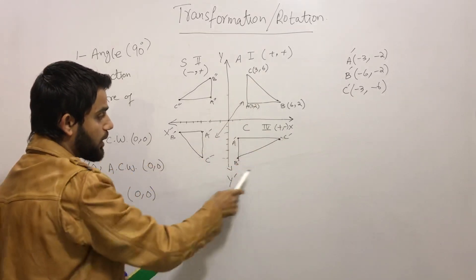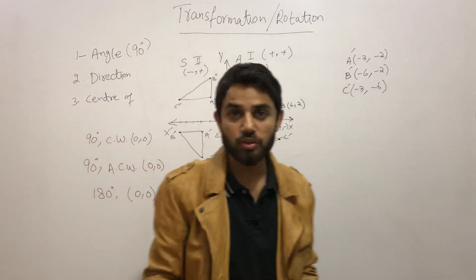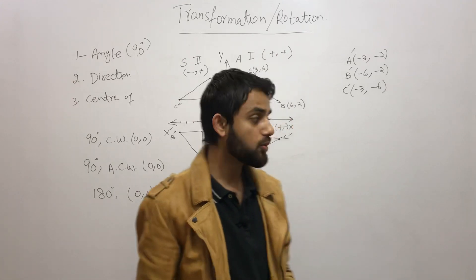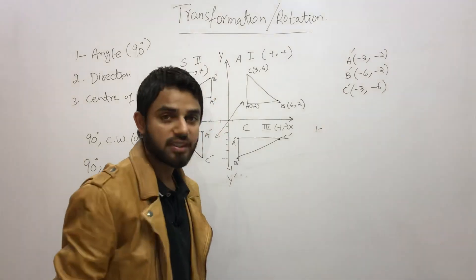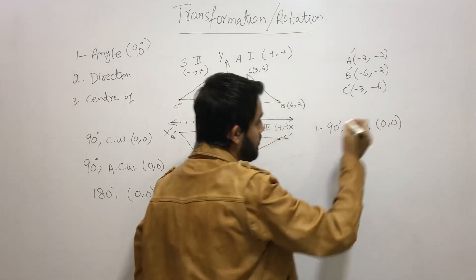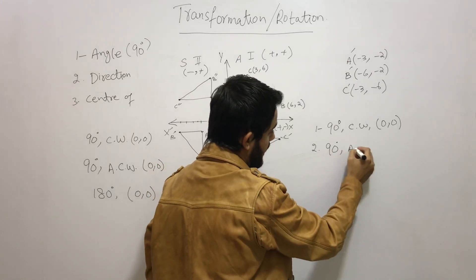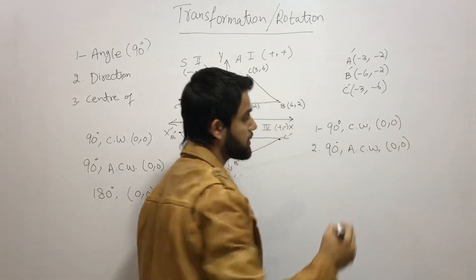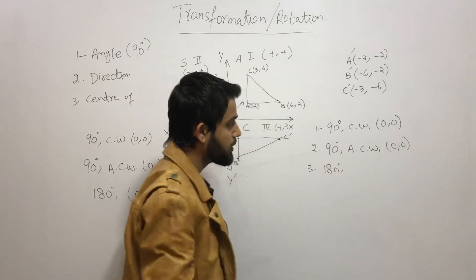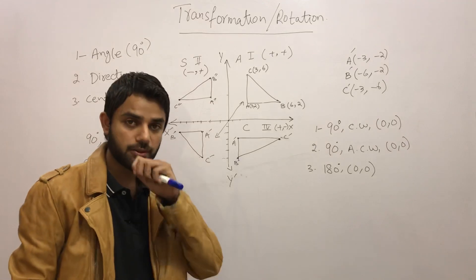Whether you go clockwise or anti-clockwise for 180 degrees, you end up in the same position. In today's video, we learned how to rotate an object 90 degrees clockwise with center (0, 0), 90 degrees anti-clockwise with center (0, 0), and 180 degrees with center (0, 0) where direction does not matter.